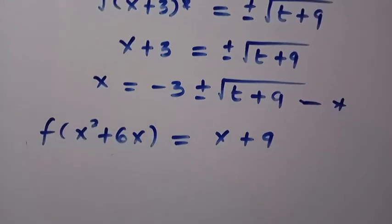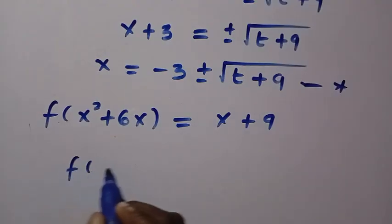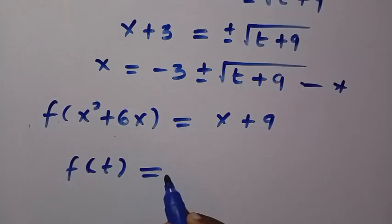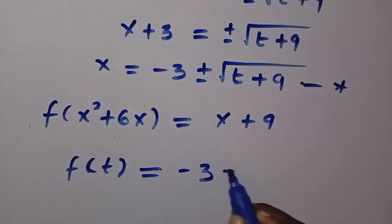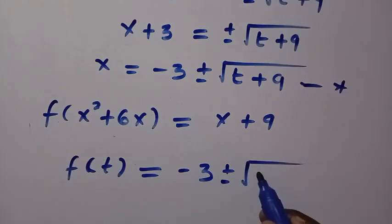We have denoted it to be t, so we have f(t) equals... and our x here is giving us -3 ± √(t + 9).